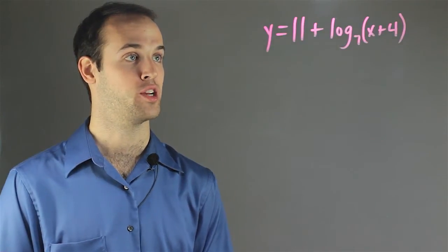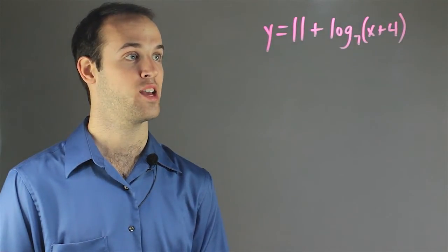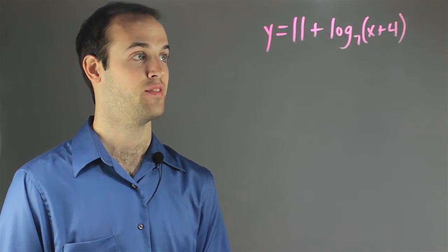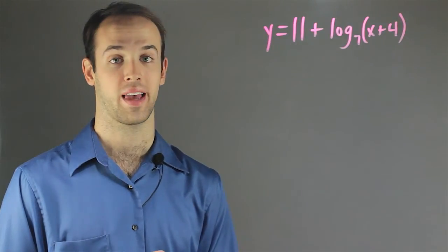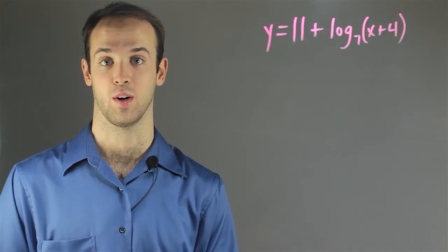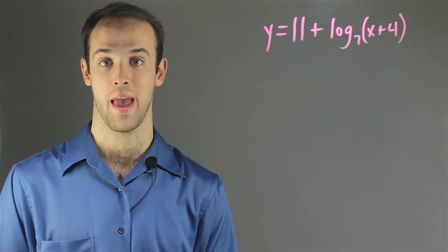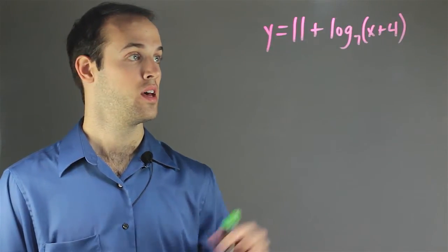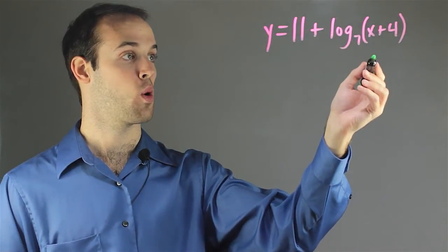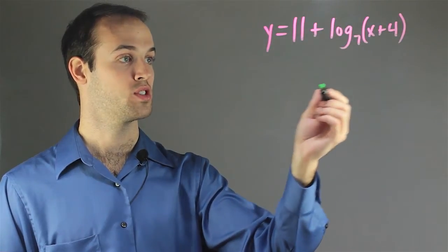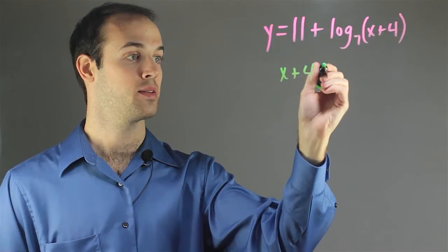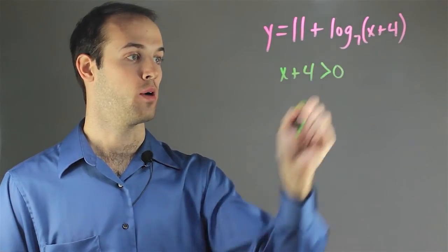So let's take a look at our equation. We have y equals 11 plus log base 7 of x plus 4. Again, I'm going to need to find where the vertical asymptote is in order to find the domain of this graph. So I know that we can't take the log of 0 or negative numbers, so I know that x plus 4 has to be greater than 0.